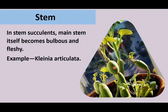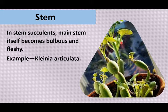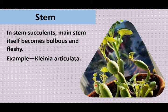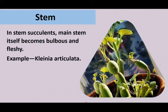In some plants like Clanea articulata, also called the bonsai plant, the stem becomes swollen, bulbous, and fleshy, and it appears as if the leaves are arising directly from the root — but this is the stem. This is an adaptation of a succulent xerophyte, where water-storage tissue in the stem causes it to become bulbous and fleshy.